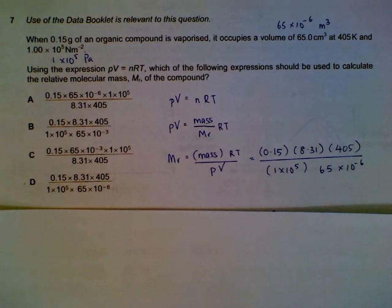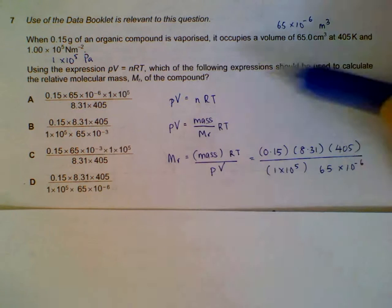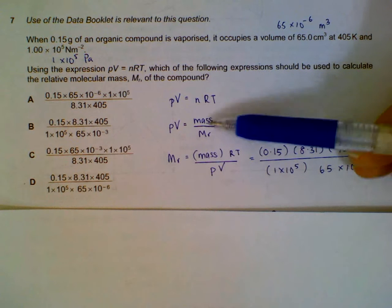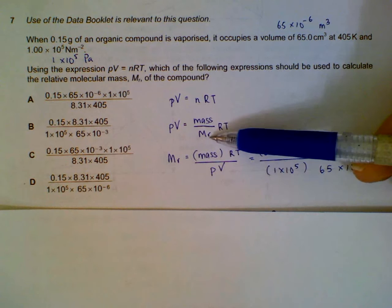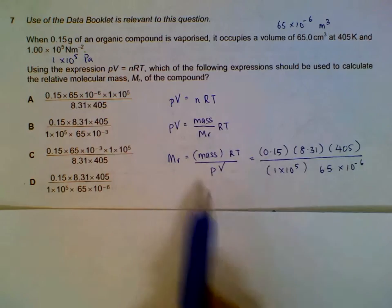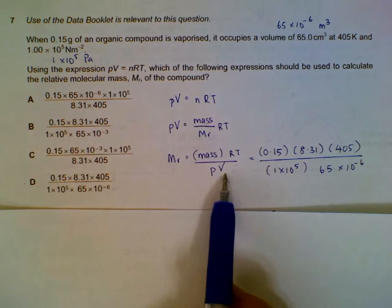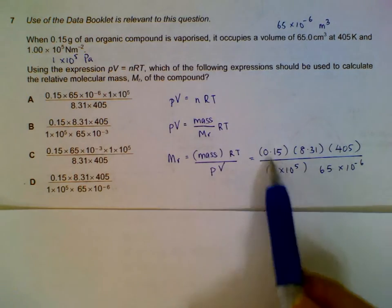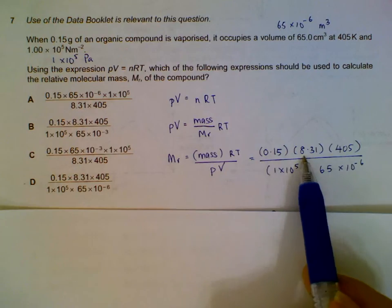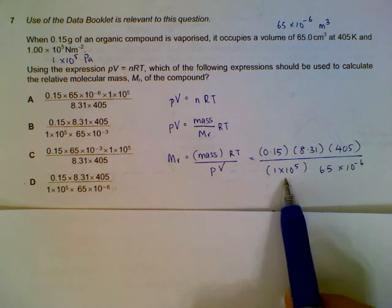Number seven: how can we calculate the Mr from PV=nRT? We start with the equation. From the number of moles, we split it into mass over Mr. We bring Mr over and the other variables to the left side, so we end up with this equation: mass times RT over pressure times volume. Then we make sure our units are consistent.